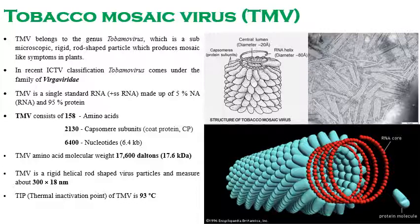TMV is a positive single-stranded RNA virus comprising 5 percent nucleic acid and 95 percent protein coat. It contains 158 amino acids, 2130 capsomere (coat protein) subunits, and 6400 nucleotides. These are very important values commonly asked in exams. The molecular weight of TMV is 17,600 daltons, or 17.6 kDa.